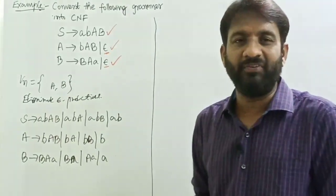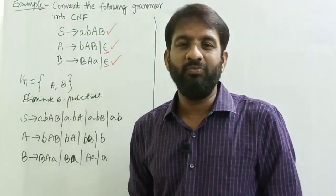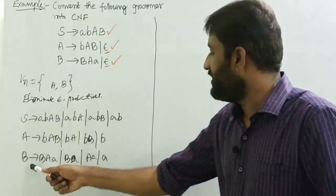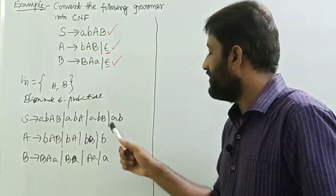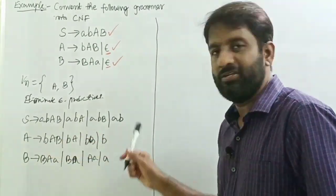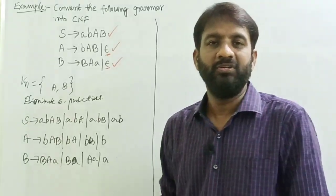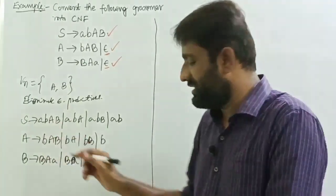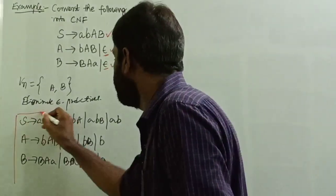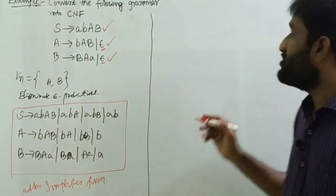Then identify if there are any useless variables in the given grammar. B derives A, A derives B, and S derives AB, so all are useful variables. This is the grammar in simplified form.